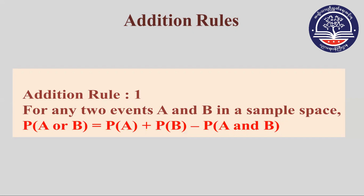The probability of A or B is equal to the probability of A plus probability of B minus probability of A and B.